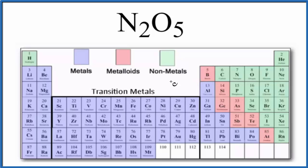We have the periodic table here, broken down into metals, metalloids, and nonmetals. Let's find nitrogen, which is right here, and then oxygen right next to it. These are both nonmetals.